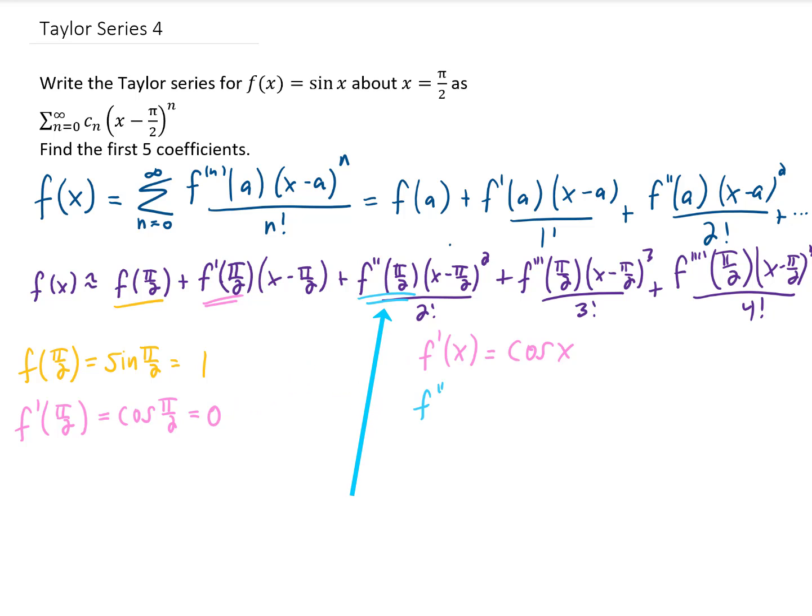Next, we need f double prime of x. The derivative of cosine is negative sine of x. And if we need f double prime of pi over 2, that means plugging x equals pi over 2 into that. That gives us a function value of negative 1.